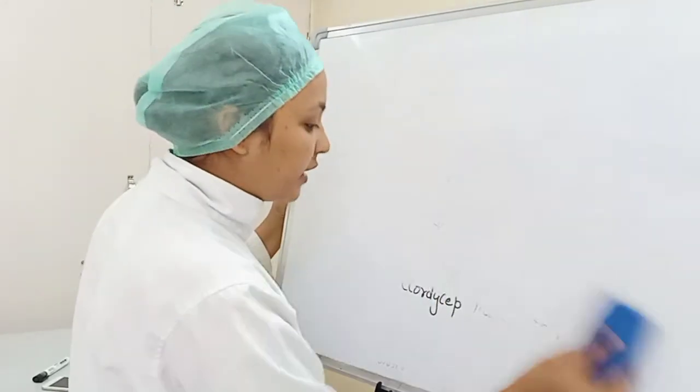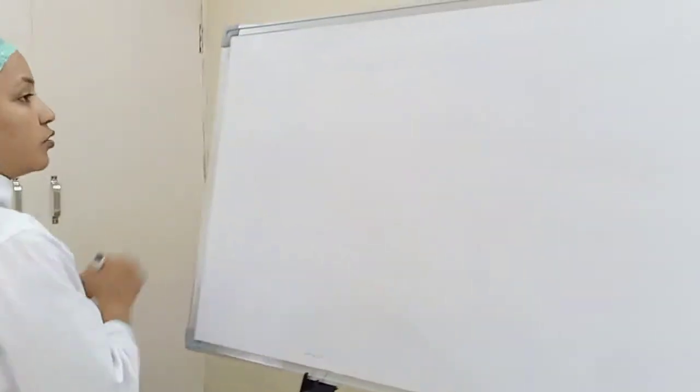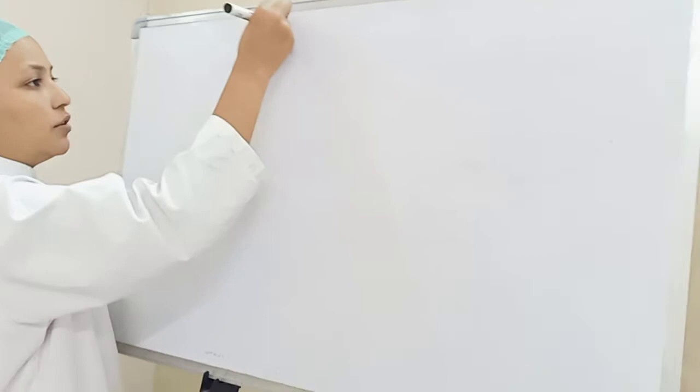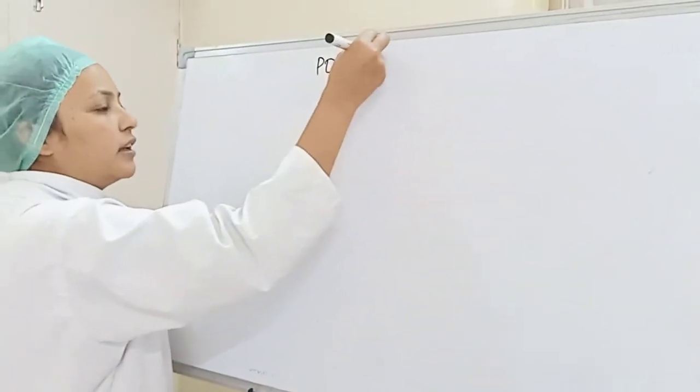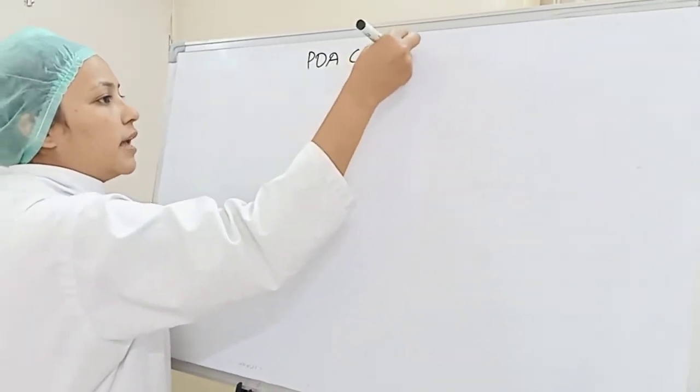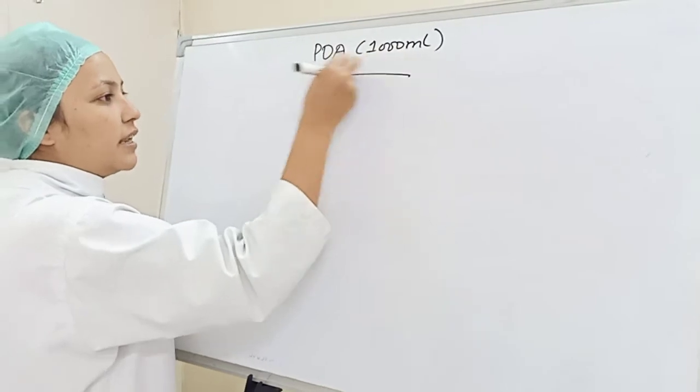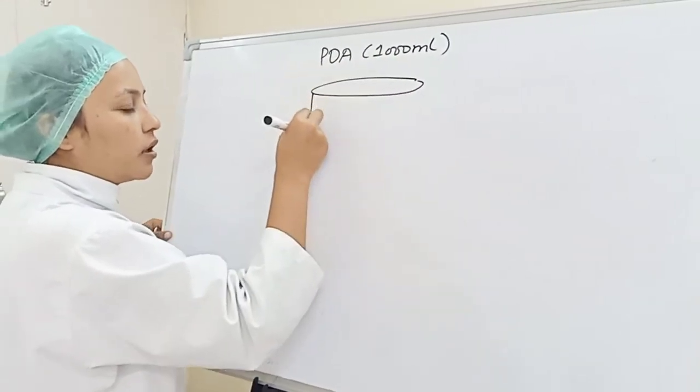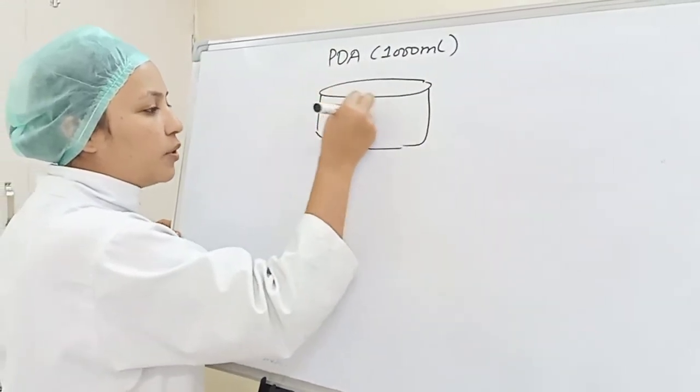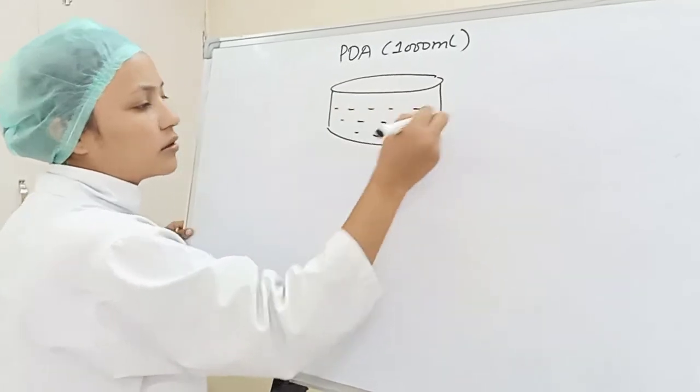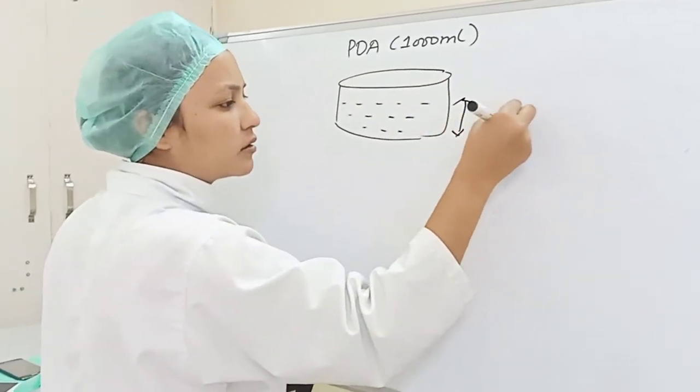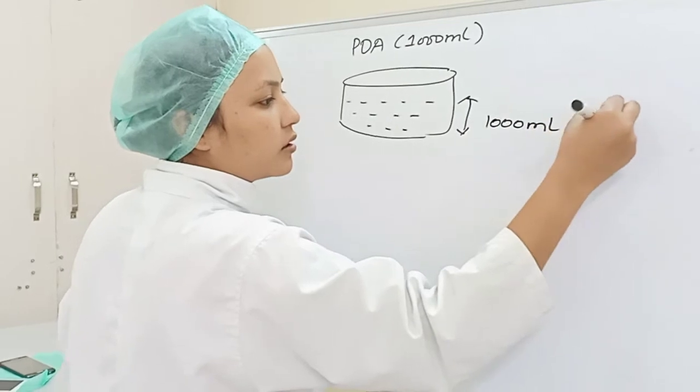So if we talk about PDA, if we are making PDA, then how do we make PDA? Potato Dextrose Agar, we will add 1000 ml water.